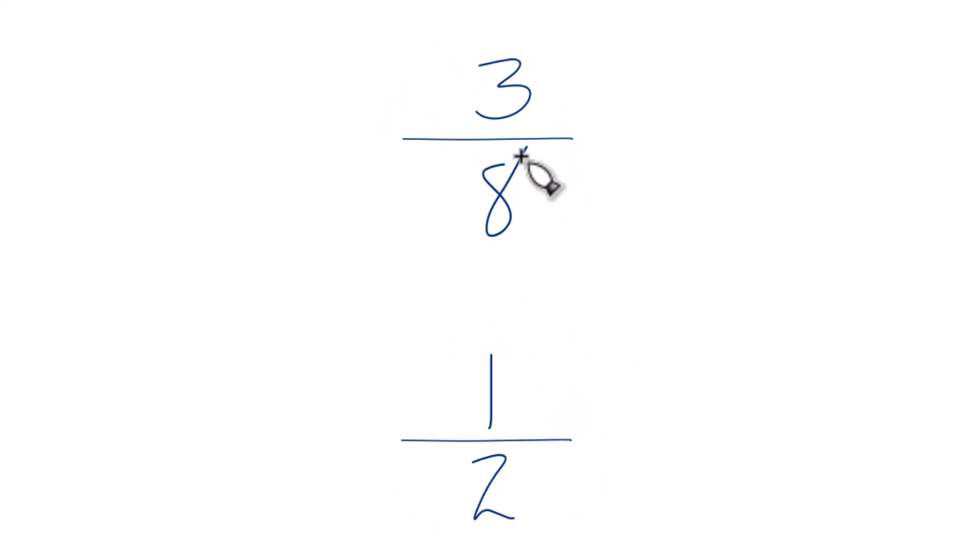You could just divide three eighths and one half on a calculator, look at the decimals and compare those. That would tell you which is bigger, three eighths or one half.